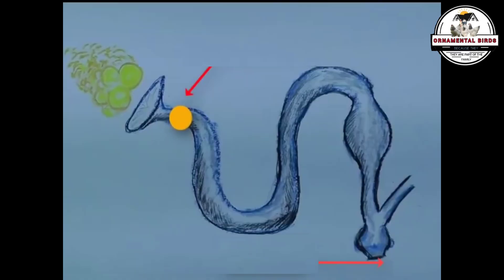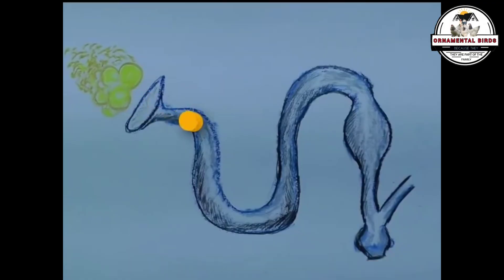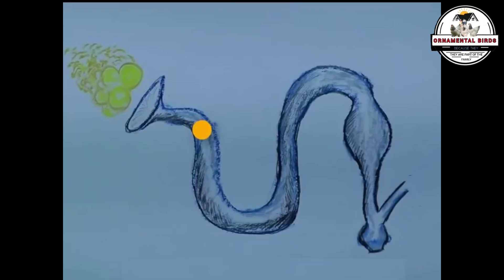It is here at this meeting point where the magic can happen — the fertilization of the ovum. It is crucial to understand that although many sperm undertake this journey, only one single lucky sperm will manage to penetrate the membrane of the ovum and fuse its genetic material with that of the hen. Once this union occurs, the zygote is formed — the first cell of what will eventually become a chick.